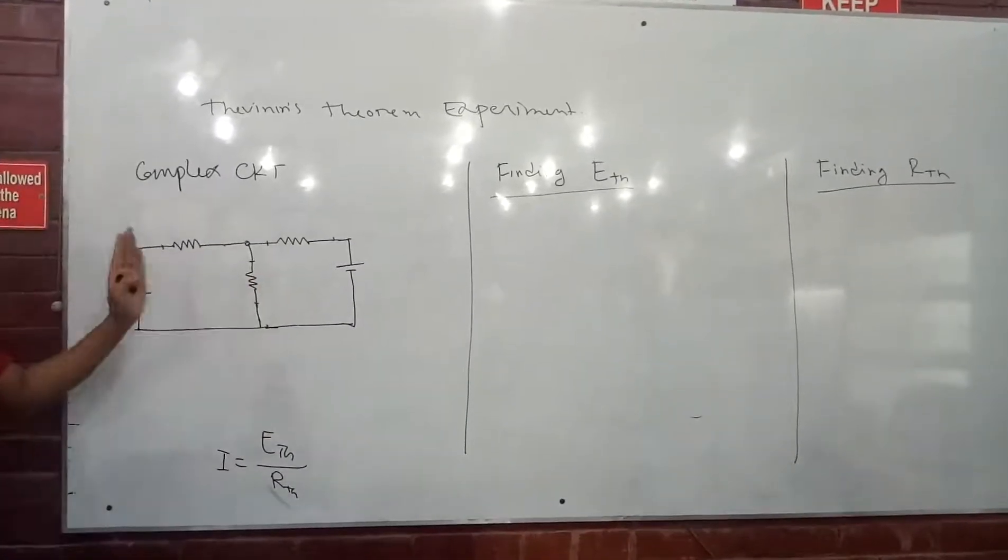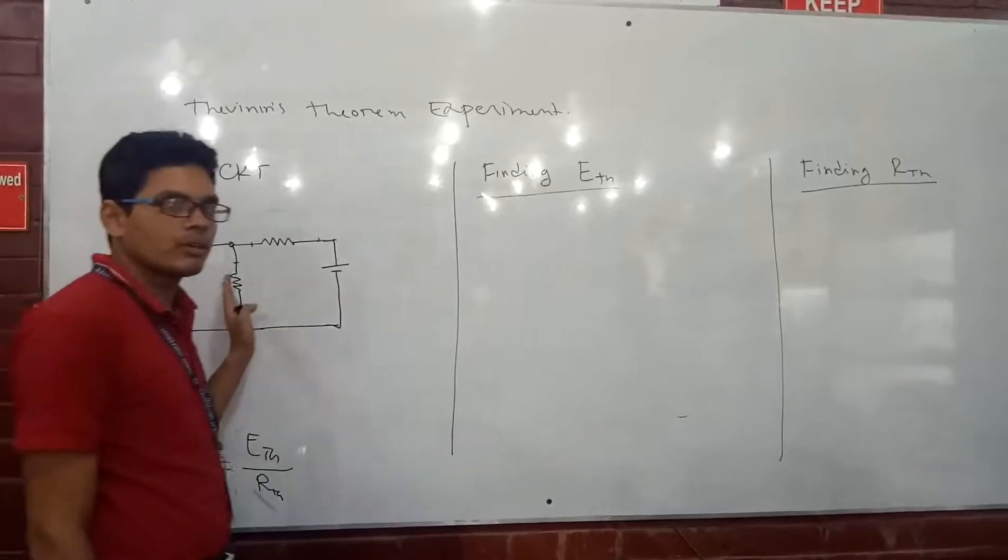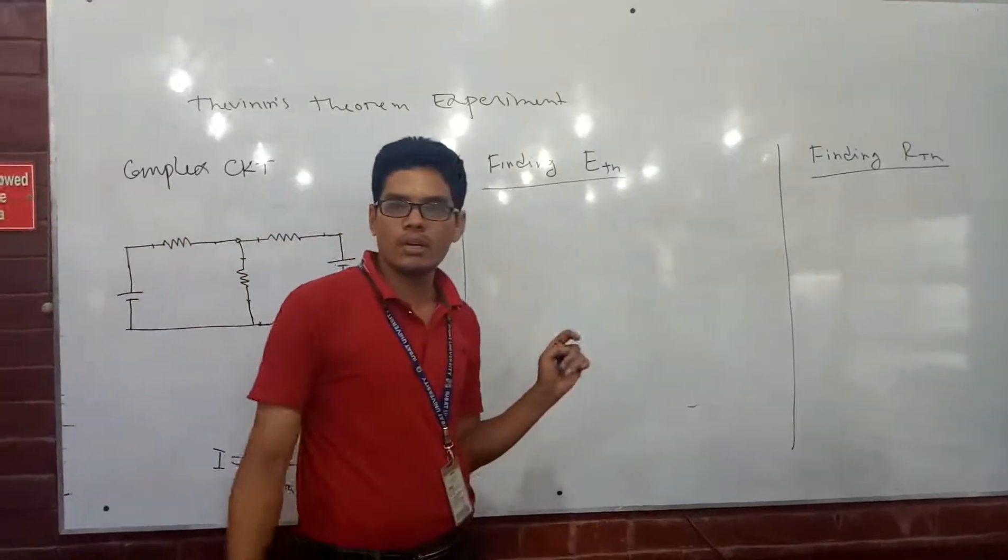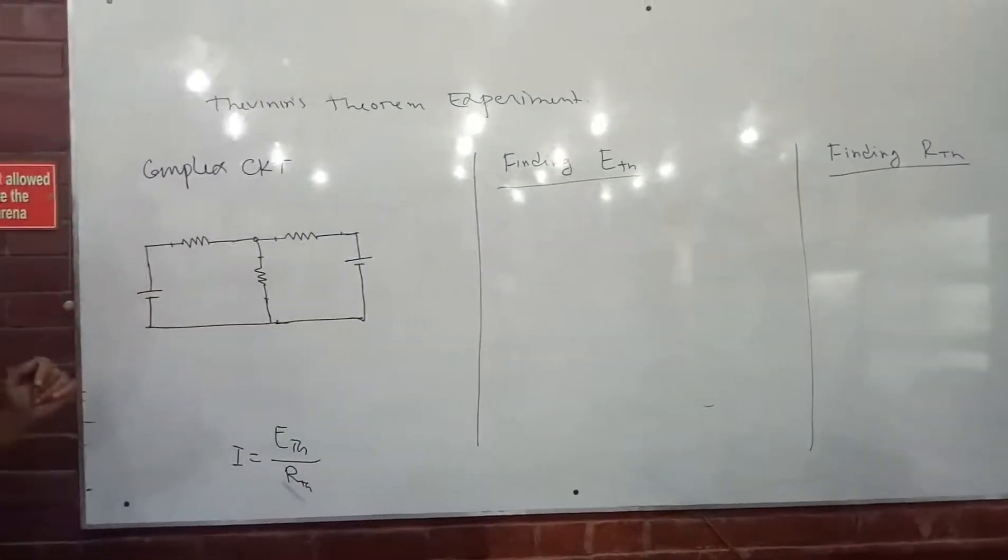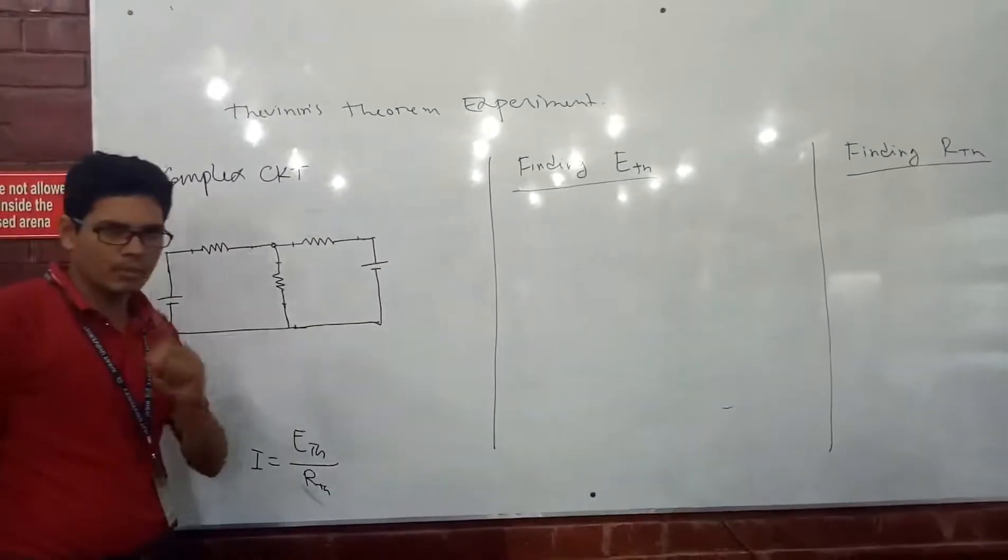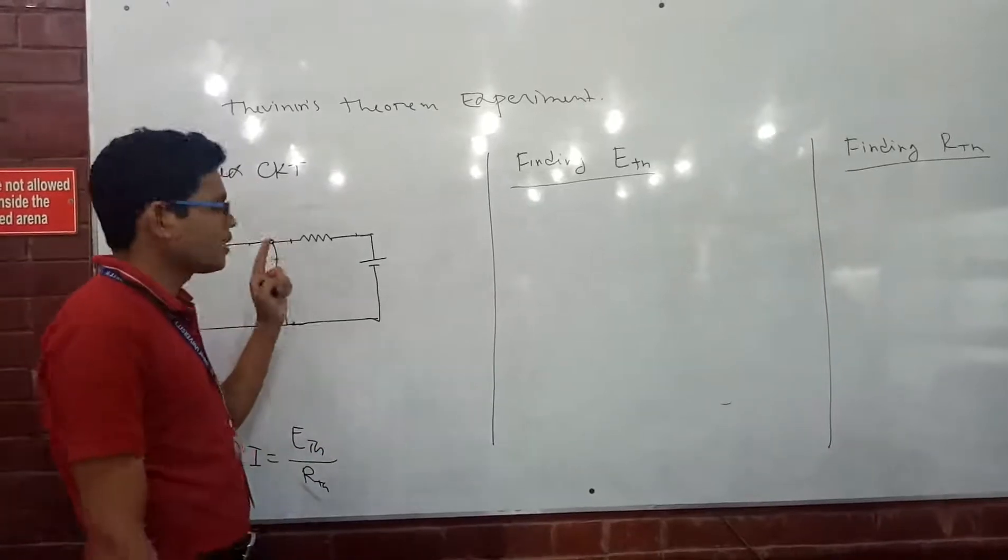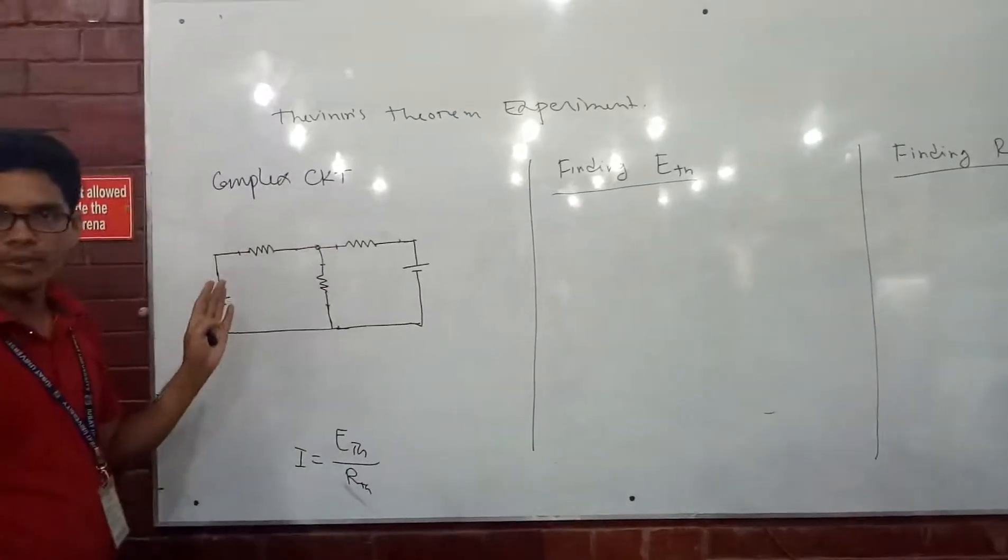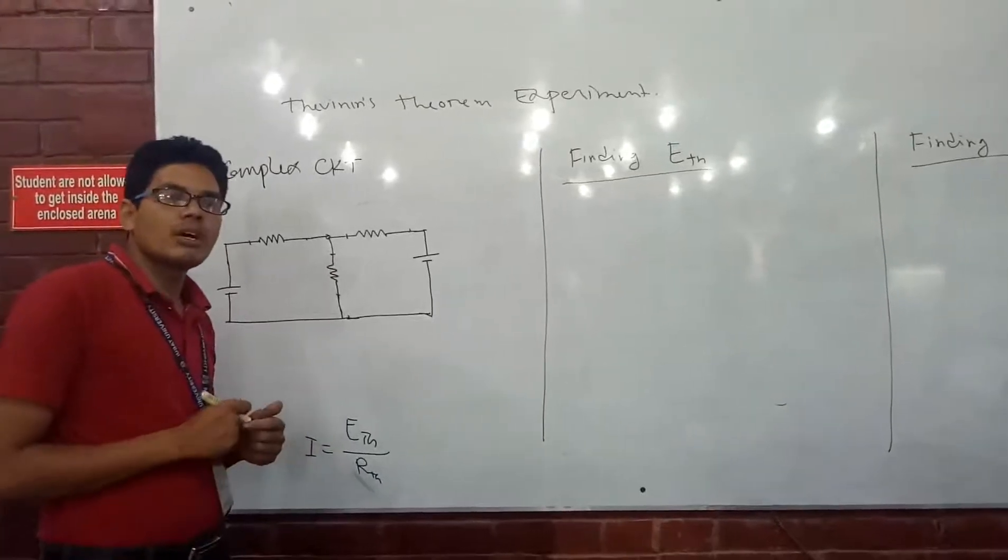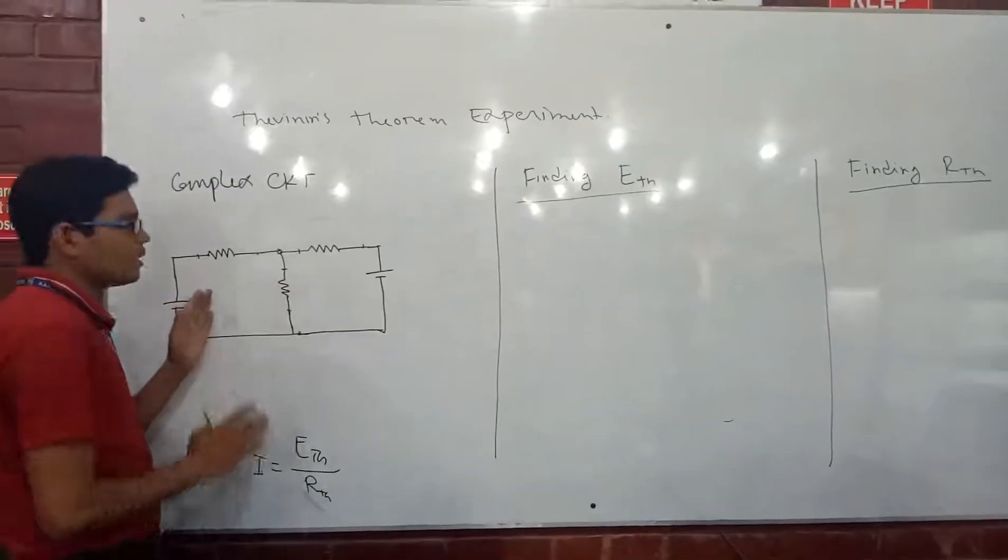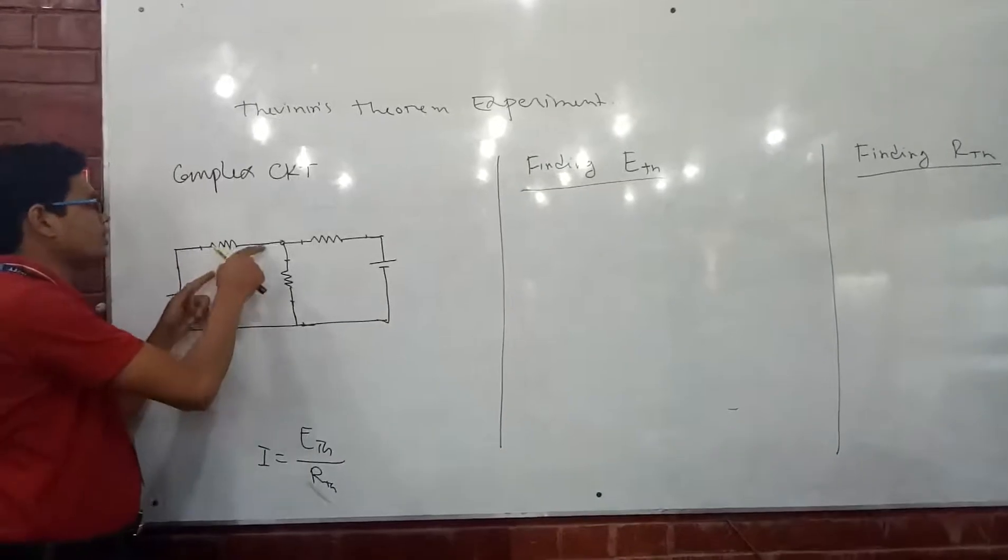Because we have done two experiments so far with this circuit, maybe Kirchhoff's and superposition. No, I think only one experiment so far we have done which was Kirchhoff's or superposition theory. Now we will conduct Thevenin's. Superposition theorem was just to give you the idea that in a circuit at any branch, the effective current when both sources are working is equal to the sum of individual source currents.